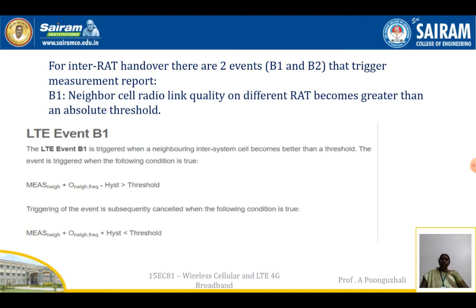LTE1 B1 is triggered when the neighboring intersystem cell becomes better than a threshold. The event is triggered when the measurement of the neighboring cell plus the neighboring frequency minus hysteresis width is greater than the threshold level. The triggering is subsequently cancelled when the measurement of the neighboring cell plus neighboring frequency plus hysteresis width is less than the threshold.